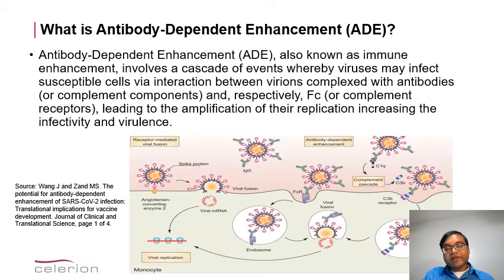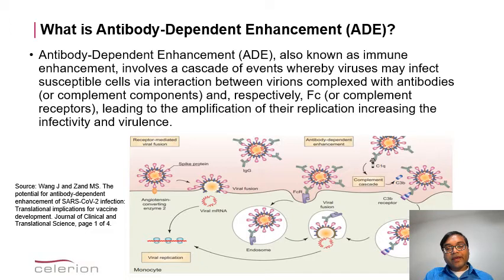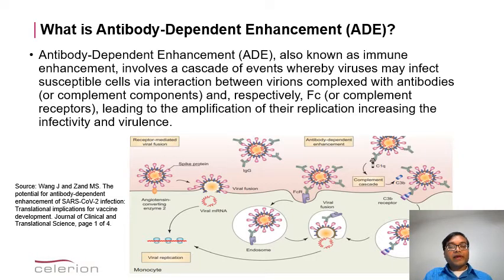On the right hand side, you see antibody dependent enhancement. In this case, the spike protein or other viral protein binds to the antibody and forms a virus-antibody complex, and then the virus gains entry to the cell via the FC receptor. The immune cells that express the FC receptor bind to that antibody and allow infusion of the virus itself. The same thing may happen through the complement cascade via C1Q and the C3B receptor, ultimately leading to amplification of the virus, increasing infectivity and virulence.